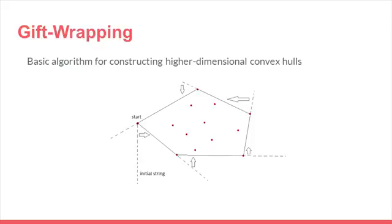We tie the string to the leftmost point and then rotate it counterclockwise until hitting the first nail. That nail will become part of the convex hull. We continue doing this until we reach the leftmost point, our starting point. This will leave us with the complete convex hull.